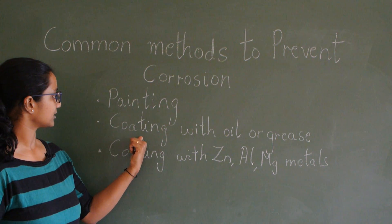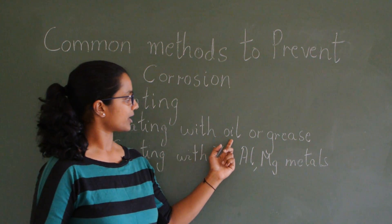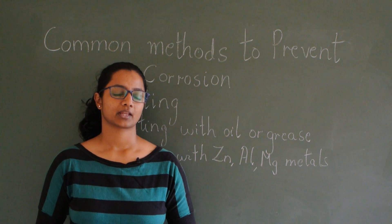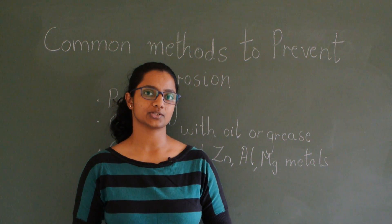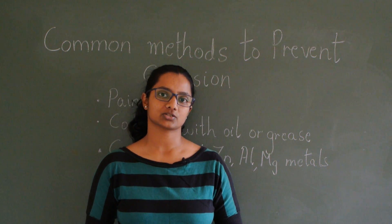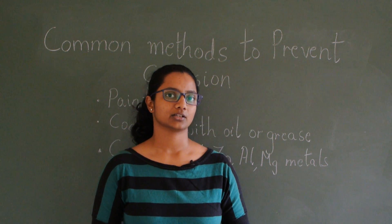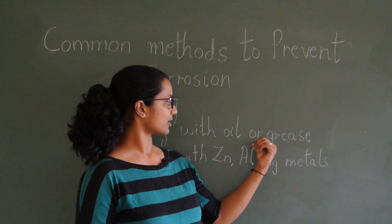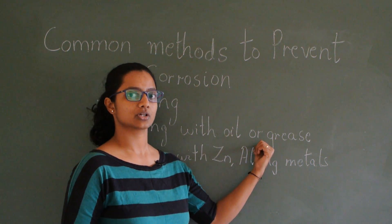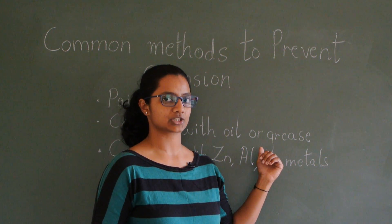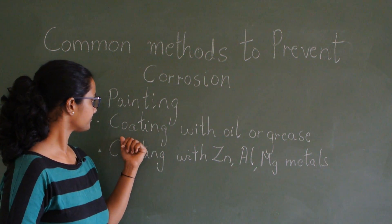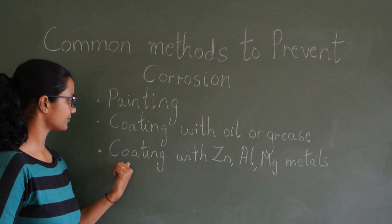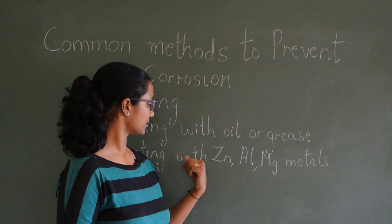Another method used is coating with oil or grease. This is done for cycle chains, the hinges of doors, and the engines of cars — they are all oiled and greased regularly. This oiling and greasing is used to minimise friction as well as to minimise corrosion.